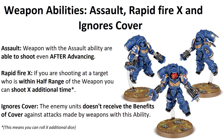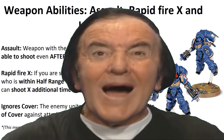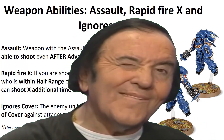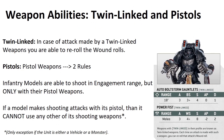Ignores Cover. Surprisingly, this weapon ignores the benefits of cover. But you still have to see the enemy that you are shooting at. Twin-linked: when a weapon has the Twin-linked ability, you can reroll the wound rolls of this weapon, so it wounds the target much more reliably.